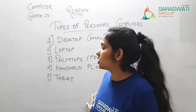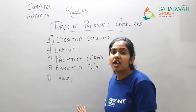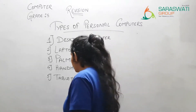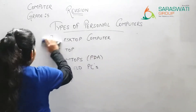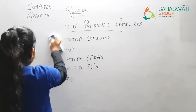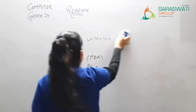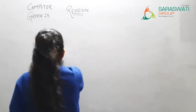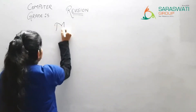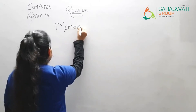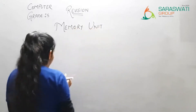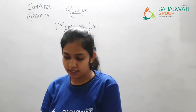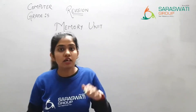So this is all about chapter number one, that is types of computers. You need to read each and every line of the textbook. Now let's move to chapter number three, that is memory unit. Memory unit means a storage device.